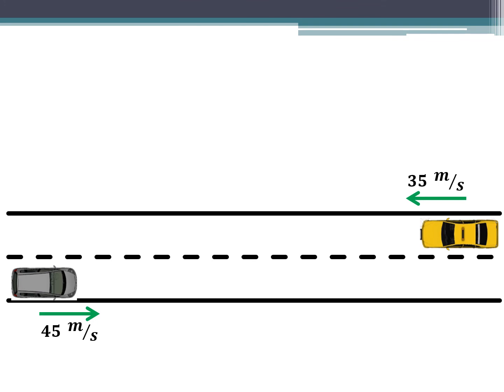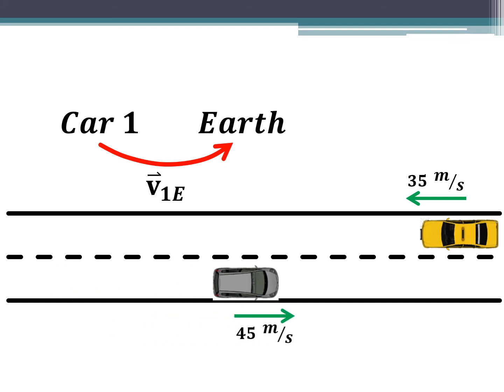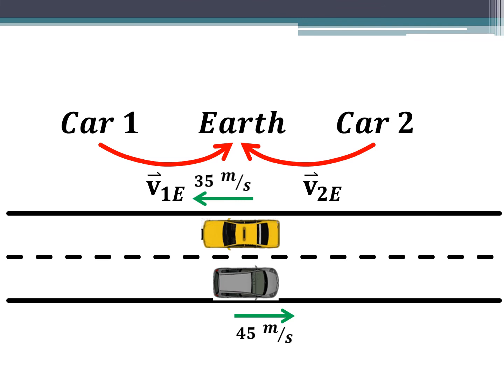Car one has a 45 meters per second velocity relative to the earth, and car two has a 35 meters per second velocity relative to the earth. To find car one's velocity relative to car two, we need the velocity of the earth relative to car two. This sounds odd since the earth isn't moving, but if you're driving on the expressway, the guardrail appears to move behind you — relative to you, it moves in the opposite direction. So we flip the vector: instead of car two moving 35 meters per second west relative to the earth, the earth moves 35 meters per second east relative to car two.